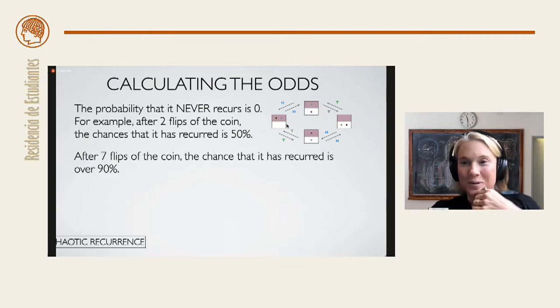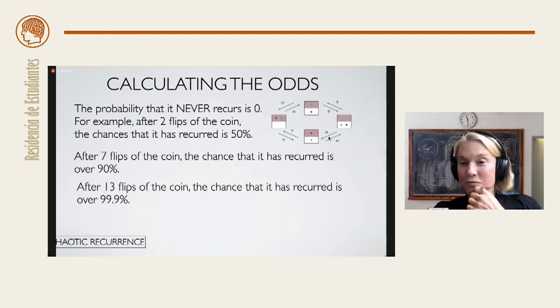Let's go back and correct what I said before. After two flips of the coin, there is no way to return to your initial state. Actually, it is 50%. If you flip a head, head, you could flip a tail and a tail. Both of those will come back to where they start. But then there's a head tail and a tail head. And those will not return to where they start. So, it is 50%. After 13 flips of the coin, the chance that it has recurred is over 99.9%. So, as you can see, it's not hard to believe that the probability that you never recur is zero.